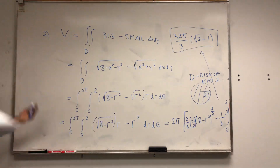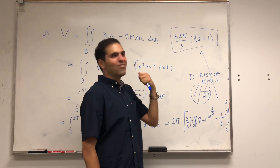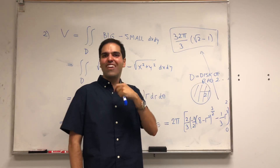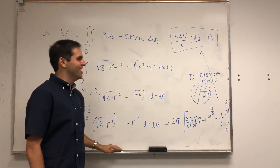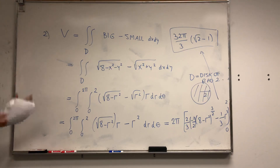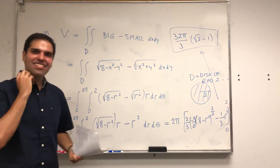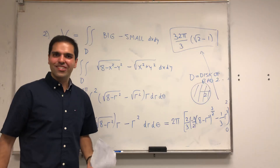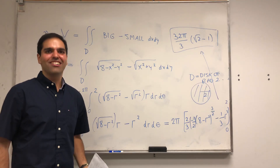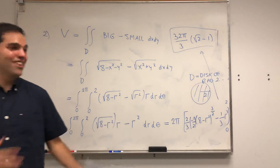Evaluating this gives 32π over 3 times the quantity square root of 2 minus 1. So next time you lick your ice cream cone, think: this is 32π over 3 times square root of 2 minus 1 units worth of deliciousness. If you like this and want to see more multivariable calculus, please subscribe to my channel. Thank you very much — I'm about to eat some ice cream now because I'm very hungry.